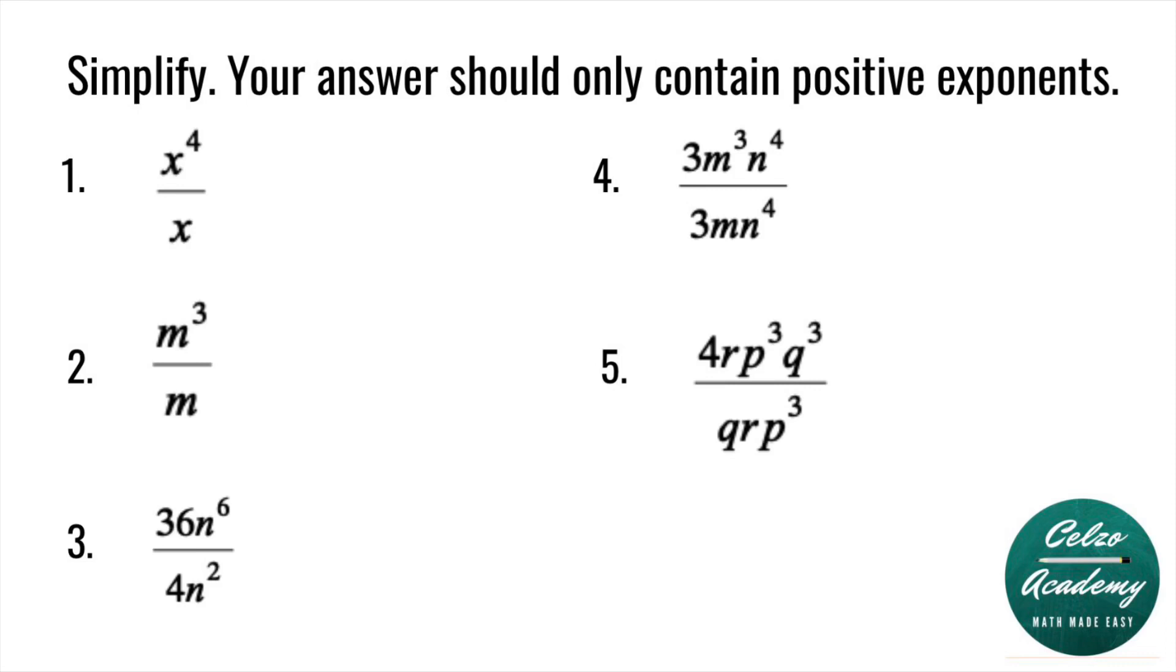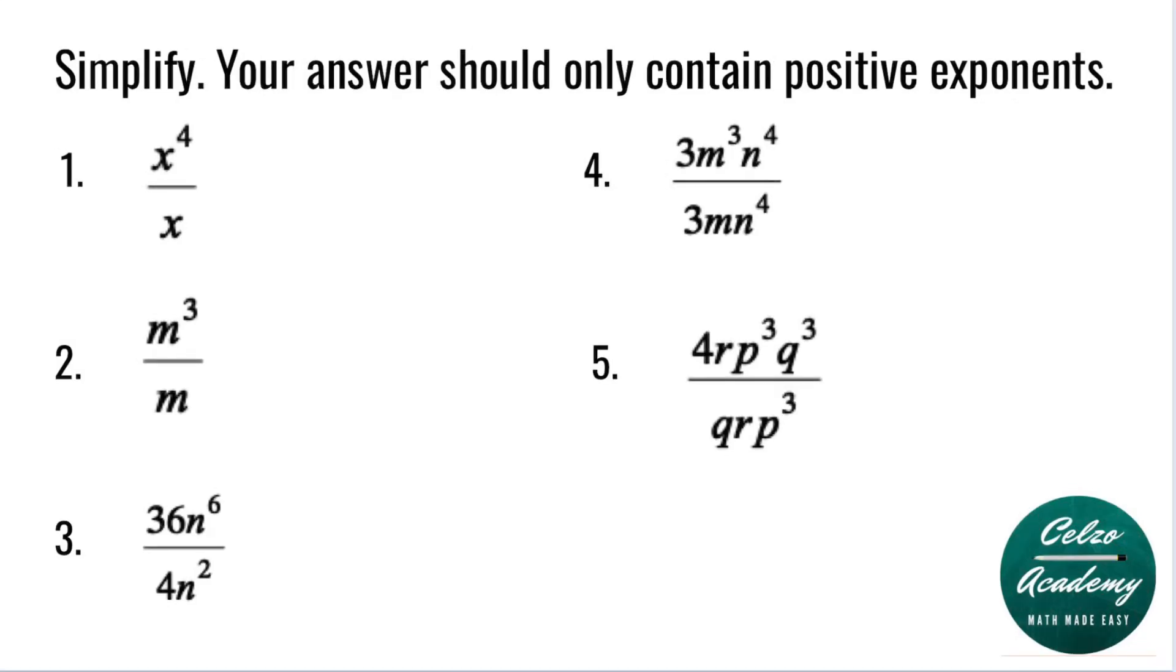Question 1: x to the 4th over x. This problem is the same thing as x to the 4th power over x to the 1st power. Using the quotient rule, we simply keep the base x and subtract the powers 4 and 1. So the answer is x to the power of 3.